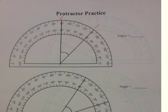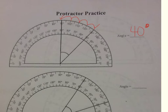Every 10 degrees is labeled. Counting: 10, 20, 30, 40. So that angle measurement is 40 degrees. If you think back to your elementary studies in angles, you had acute, right, obtuse, or straight. Which one would this be? It's acute. Why? Because it is less than 90 degrees.